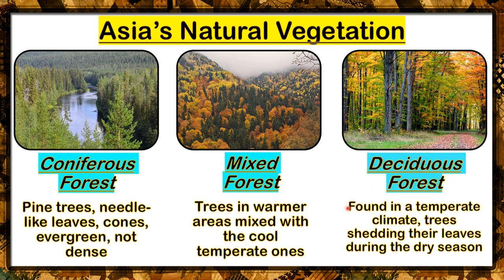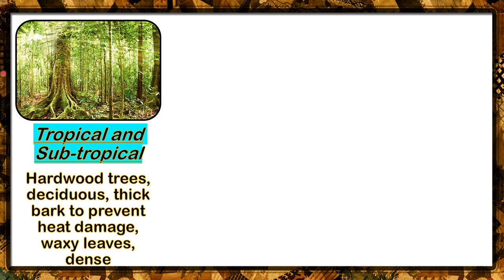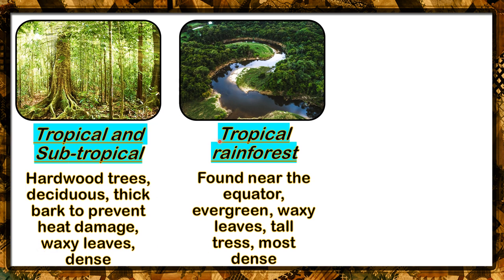Deciduous forest — found in a temperate climate, with trees shedding their leaves during the dry season. Next, tropical and subtropical forests — hardwood trees, deciduous, thick bark to prevent heat damage, waxy leaves, dense. A tropical rainforest is found near the equator: evergreen, waxy leaves, tall trees, and most dense. That's why in Thailand we have tropical rainforests because we are near the equator.